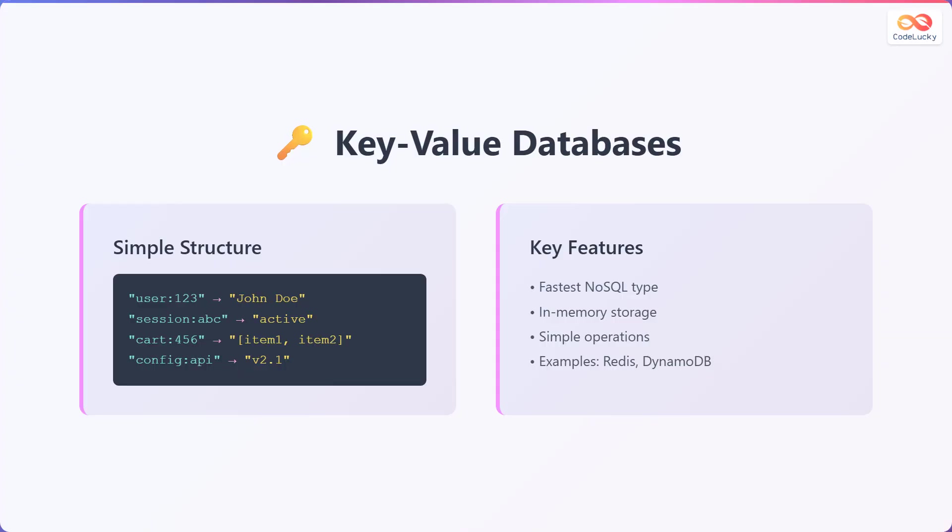Next, we'll explore key value databases. These databases use a simple structure consisting of keys and their associated values. For example, the key user:123 points to the value John Doe, the key session:ABC points to the value active, the key cart:456 points to items 1 and 2, and the key config:API points to value v2.1. Key features include being the fastest NoSQL type due to their simplicity, memory storage for rapid data access, and simple operations such as get, put, and delete. Examples of key value databases are Redis and DynamoDB.